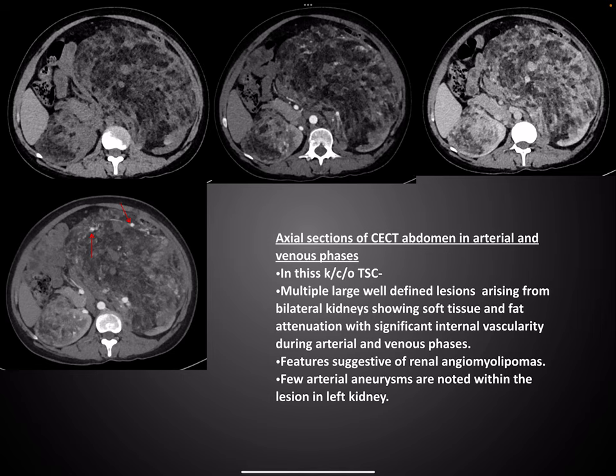Another patient presented with gross abdominal distension. Axial sections of CT abdomen were taken in arterial and venous phases — a known case of tuberous sclerosis. Multiple large well-defined lesions arising from bilateral kidneys are noted showing both soft tissue and fat attenuation with significant internal vascularity during arterial and venous phases, features suggestive of renal angiomyolipomas. The maximum intensity projection (MIP) image also shows arterial aneurysms noted within the lesion in the left kidney.